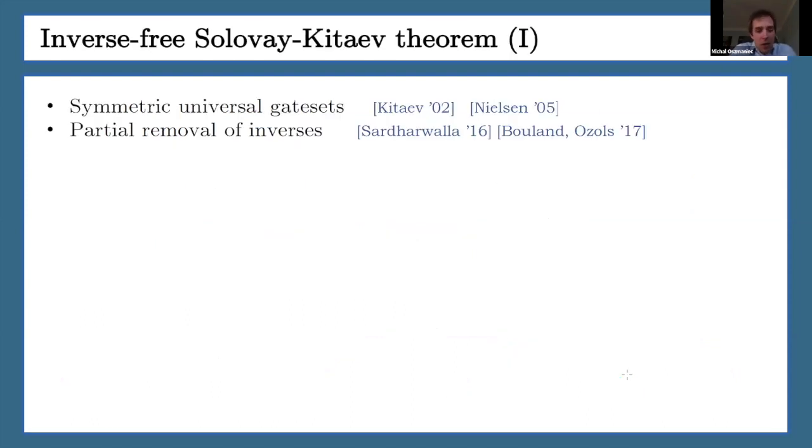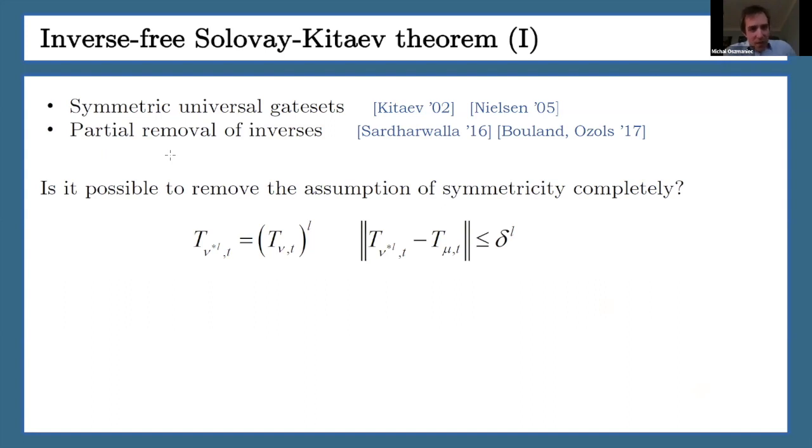And now I want to apply it in the context of inverse-free Solovay-Kitaev theorem. So traditionally, Solovay-Kitaev assumes that my gate set is symmetric. So there was some recent research, there were some recent results concerning possibility of partial removal of those inverses. I want to present some idea why you can remove them.